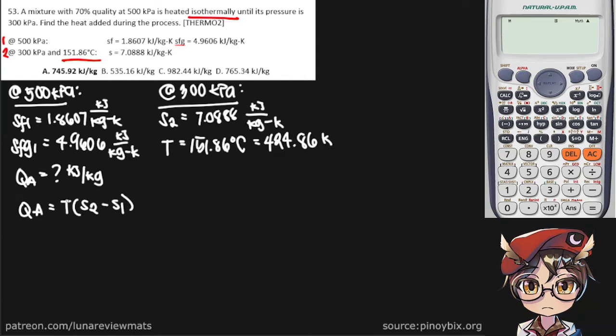Now we already have our constant temperature and we already have our final entropy state. We just need to find the initial entropy state, which we do actually have enough information to find using the steam quality value of 70% or 0.70.